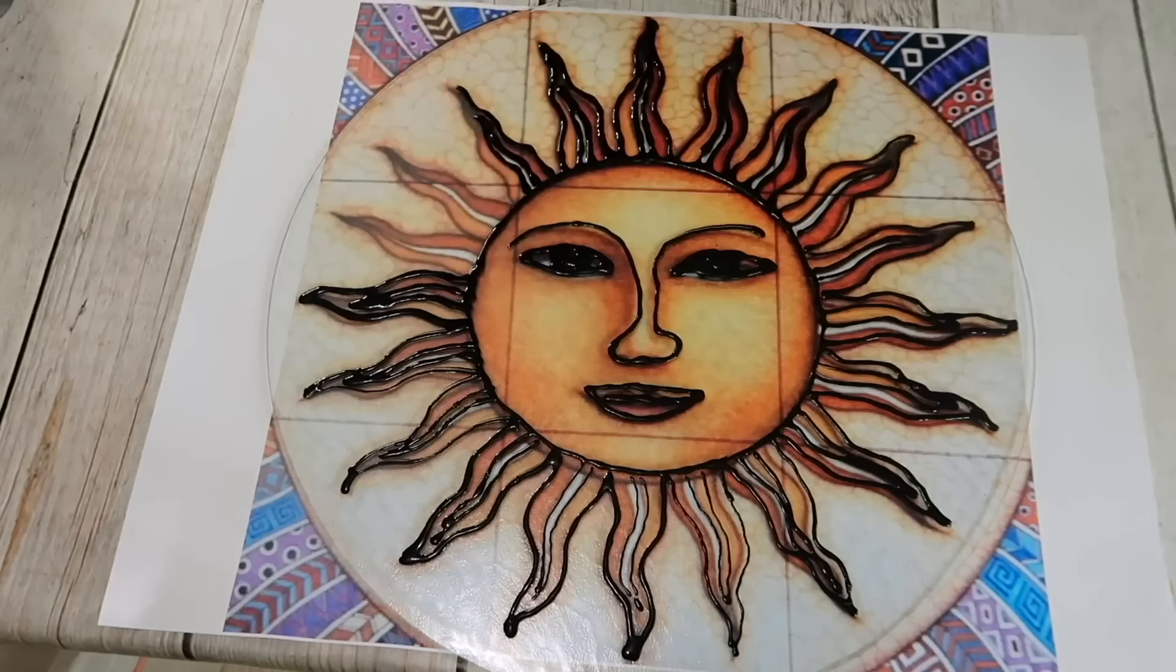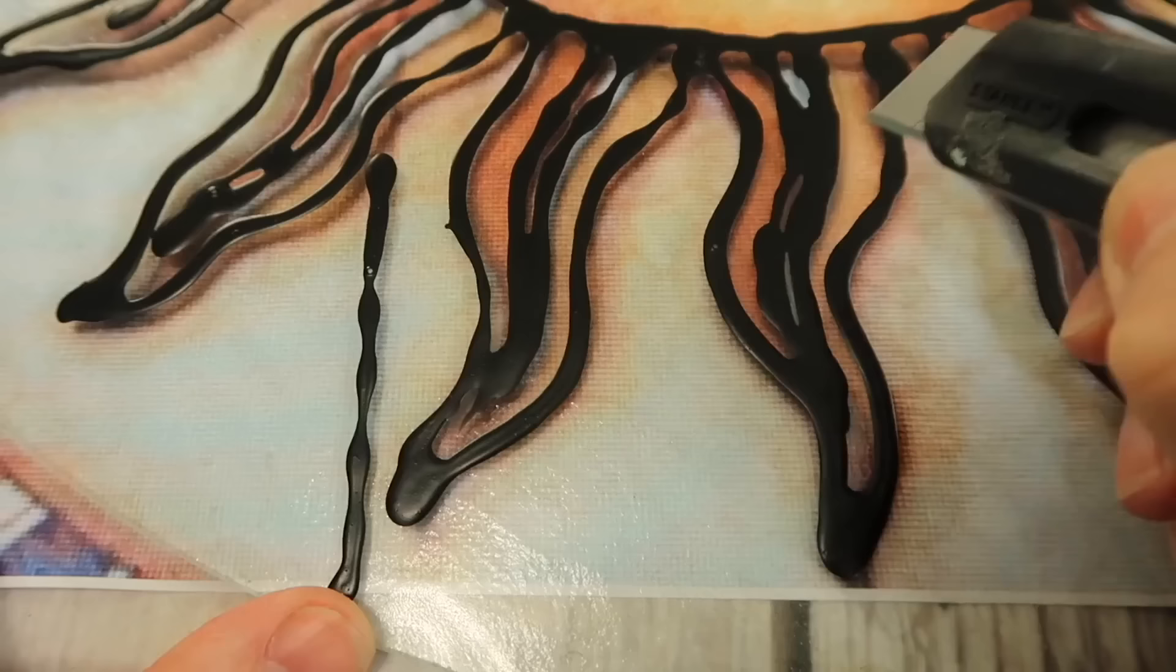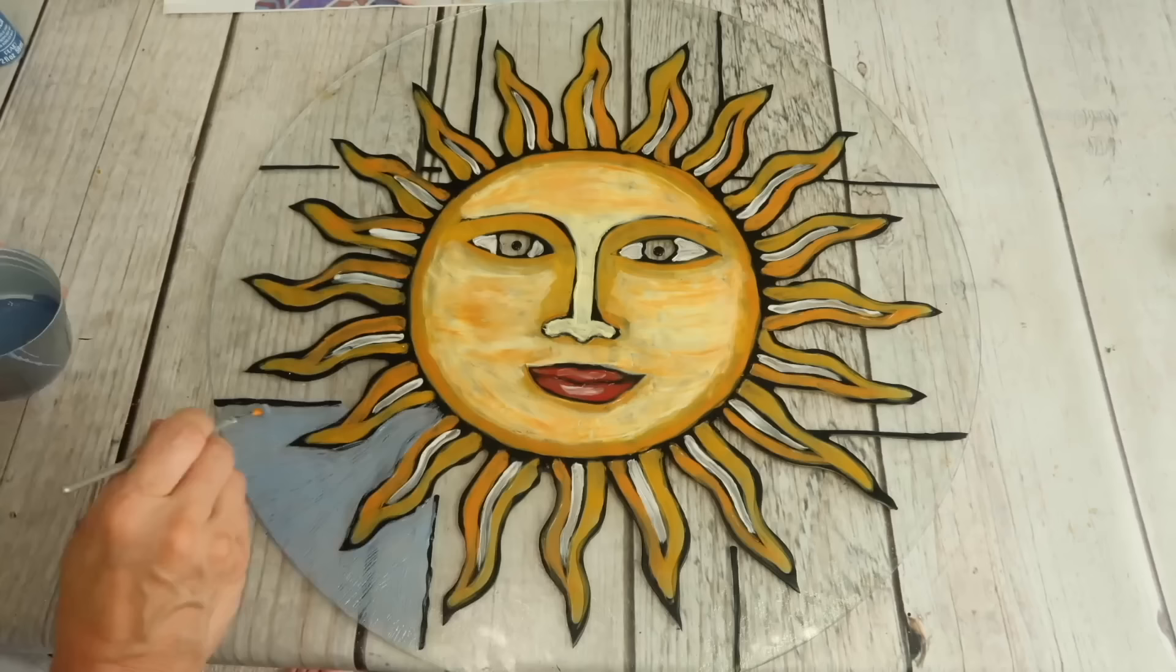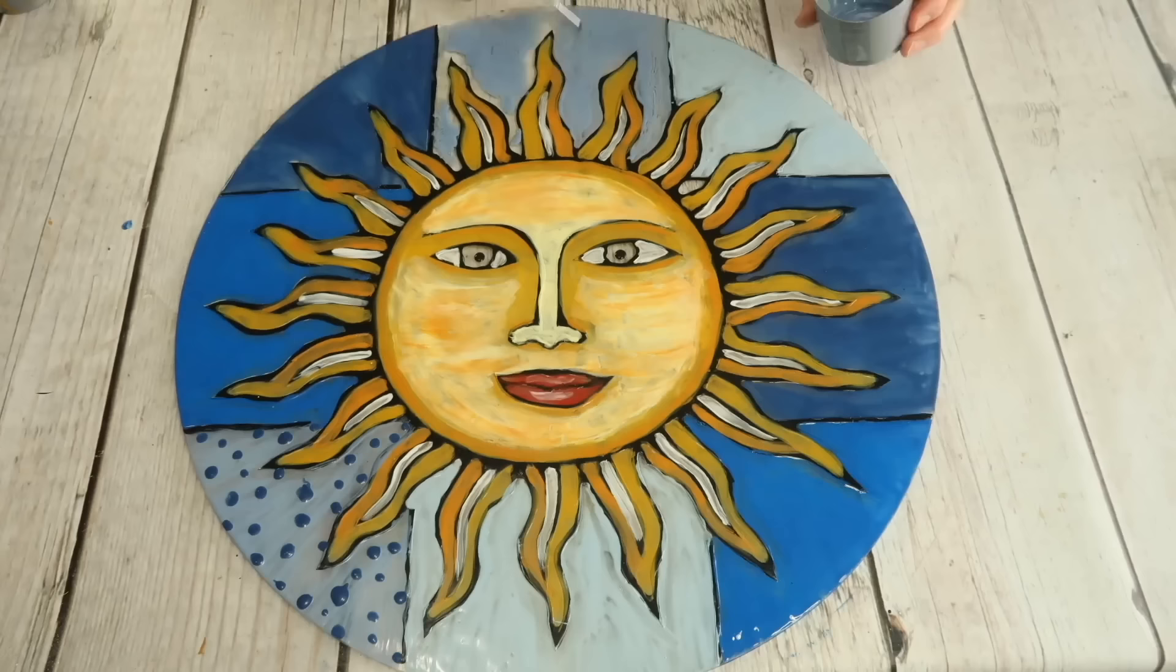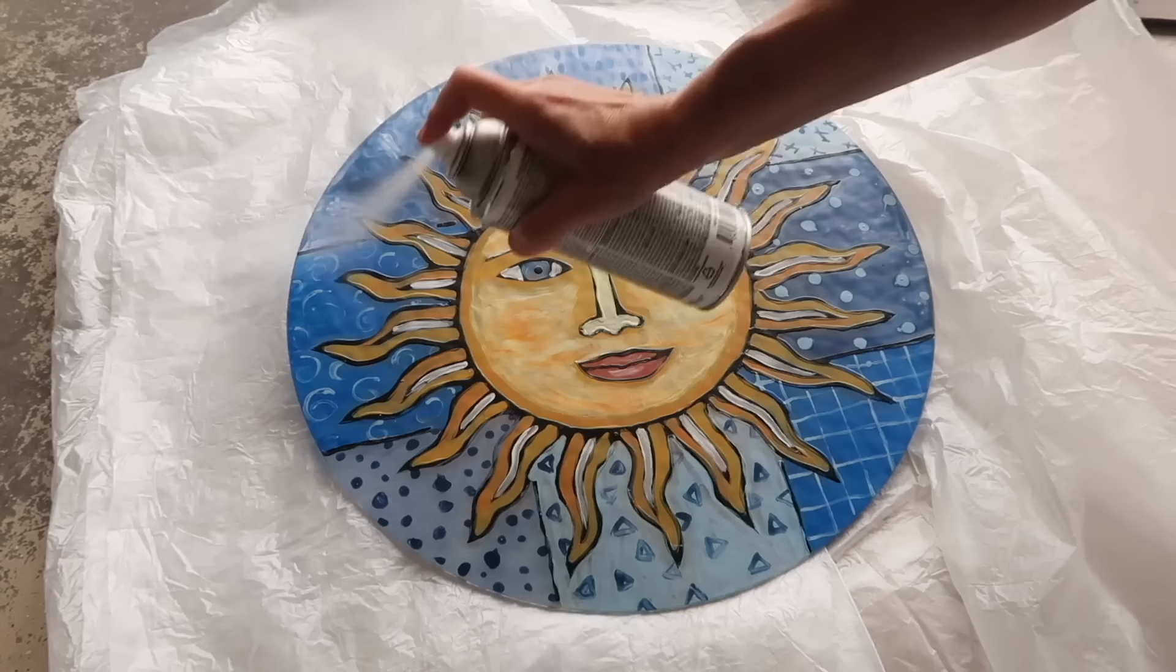Once the lines had dried, I cleaned up any lines that were too thick by cutting them away using a utility knife. I painted the background using a one-inch wide brush. I added designs to each panel. I gave the paint two coats of spray sealant.